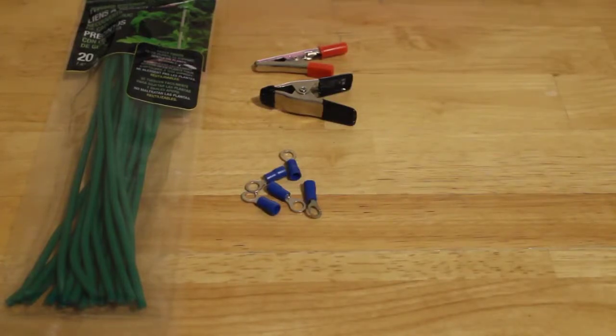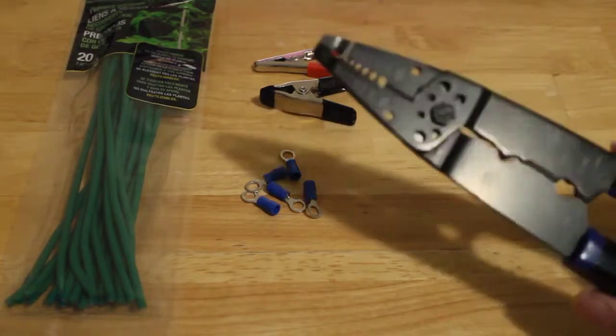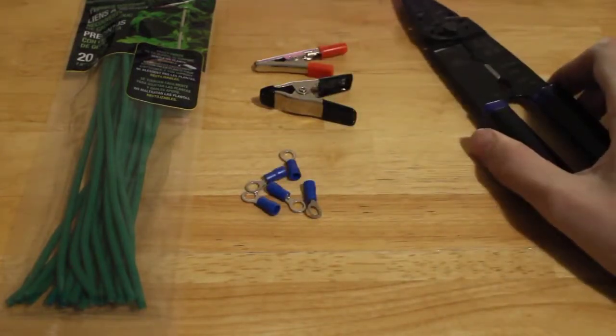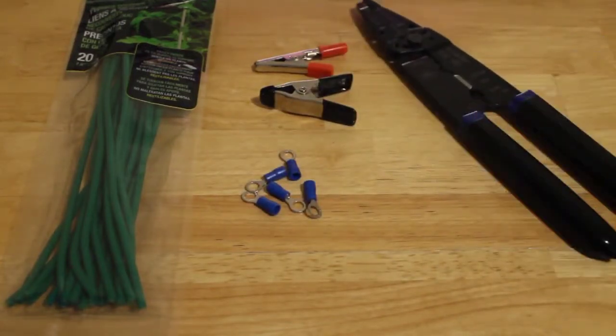And tools you're going to need is something like a crimping tool, now you might be able to use pliers but I suggest using an actual crimping tool like this one. And another thing we're going to need is a drill and a hot glue gun. Okay, let's start building.